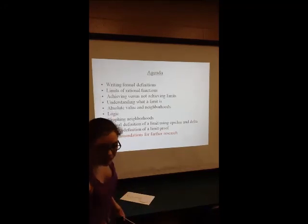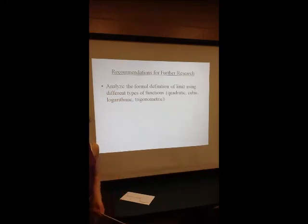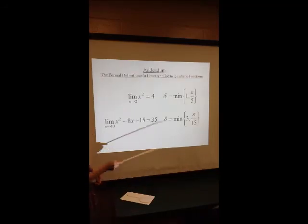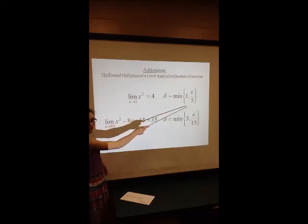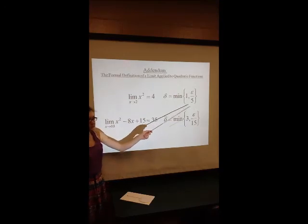Some recommendations for further research from the first round of the math fair was to analyze the formal definition of a limit using other types of functions. So in my addendum, I focused on quadratic functions. Ultimately, what we found is that delta will end up being equal to the minimum of two values: first, a stipulated value, and second, a value derived from a proof.